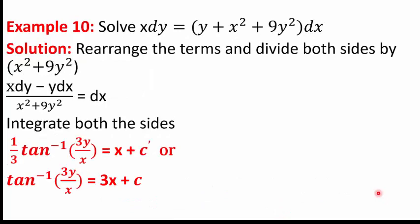In the tenth example, we solve X dY = (Y + X² + 9Y²)dX. Bringing Y dX to the left: (X dY − Y dX)/(X² + 9Y²) = dX. Factoring X² from the denominator gives 1/(X²) · 1/(1 + 9Y²/X²), allowing integration to yield (1/3)tan⁻¹(3Y/X) = X + C′. Multiplying through by 3: tan⁻¹(3Y/X) = 3X + C.